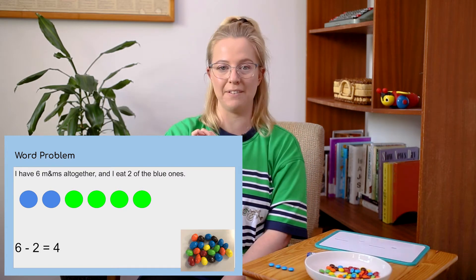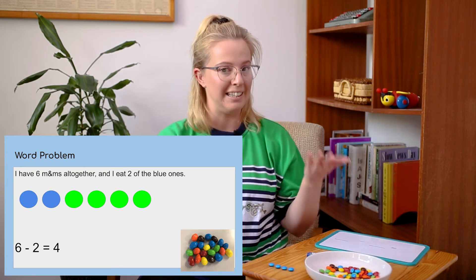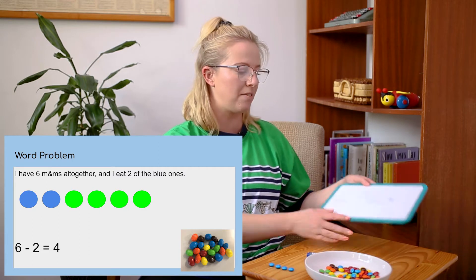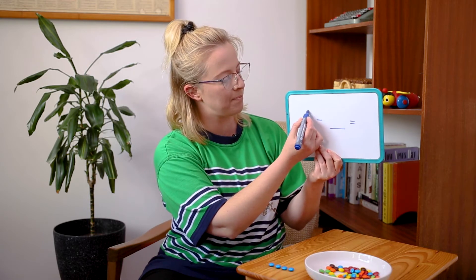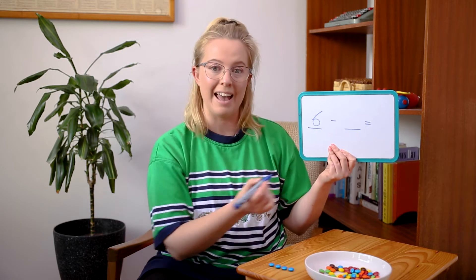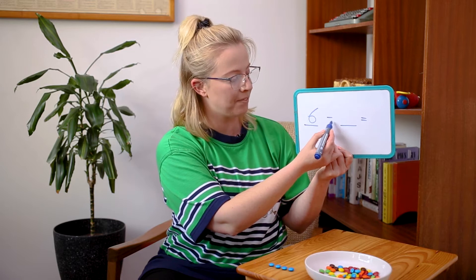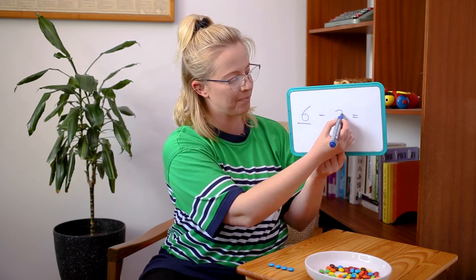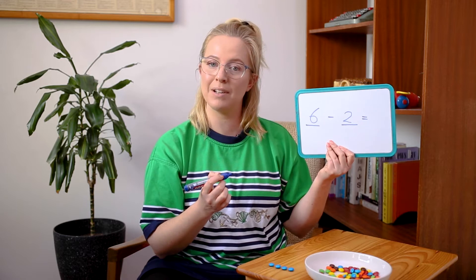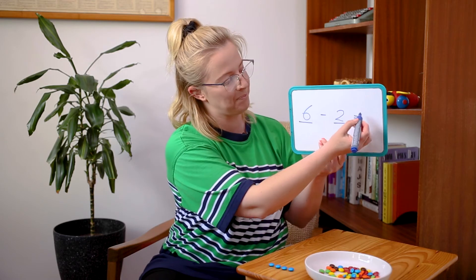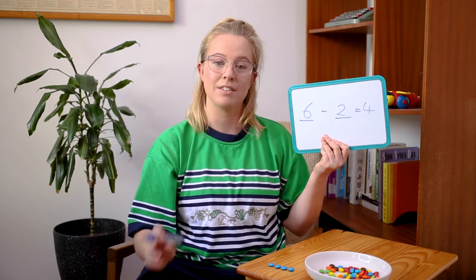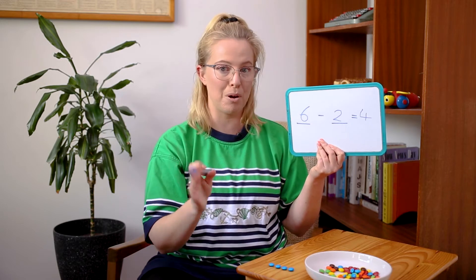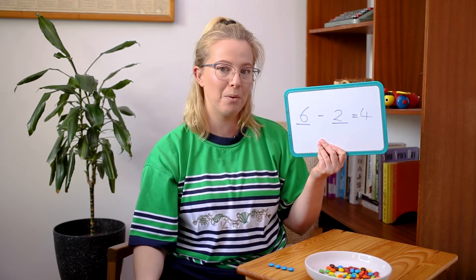One, two, three, four. I have four M&Ms left over. Let's see what that looks like if I write it down on the equation. I had six M&Ms all together and I took away — or ate — two of them, and how many were left over? Four. That's what our subtraction word problem looks like as a number equation.